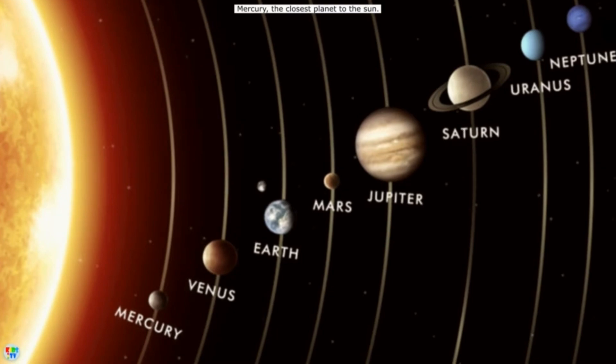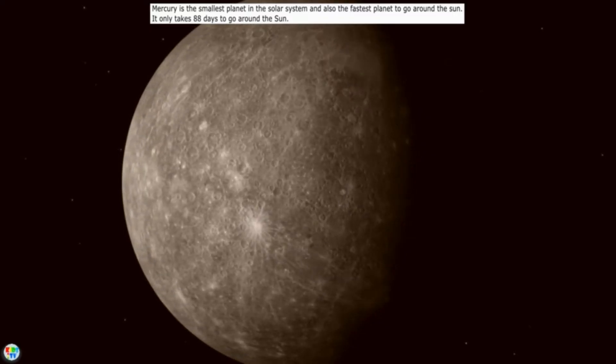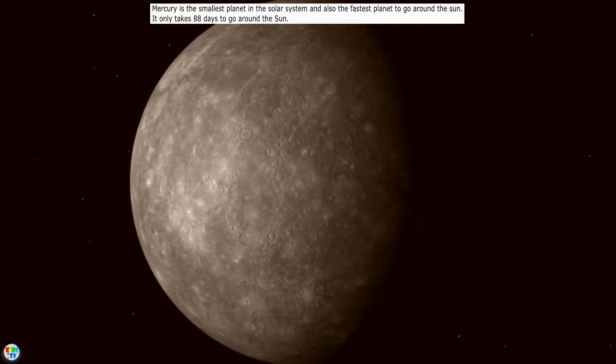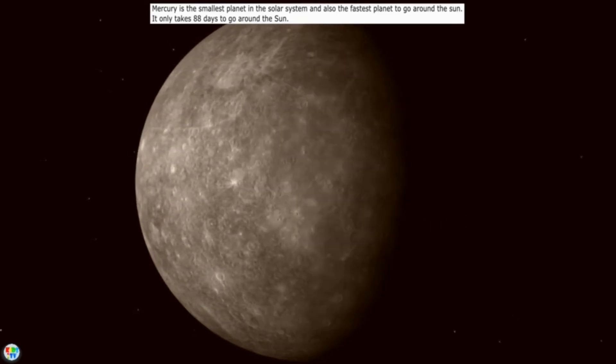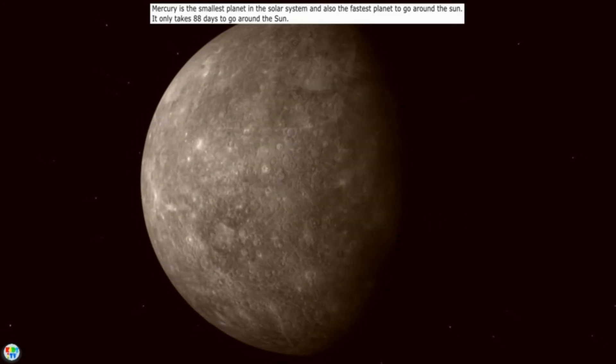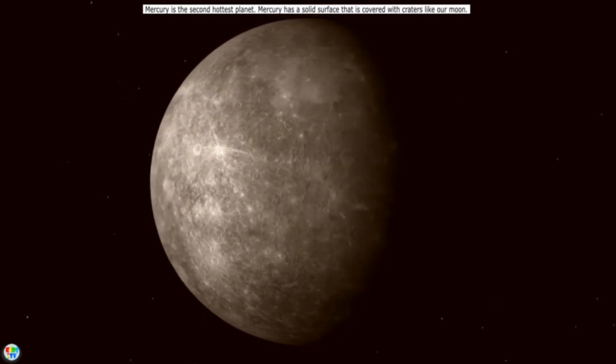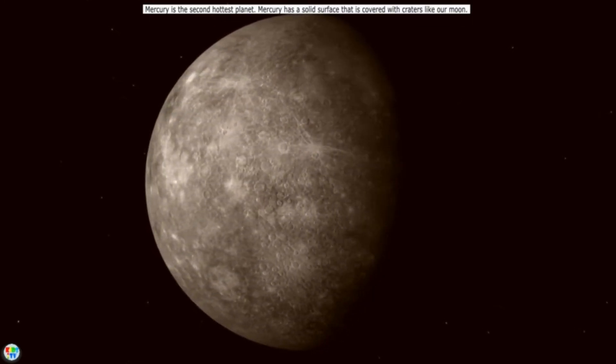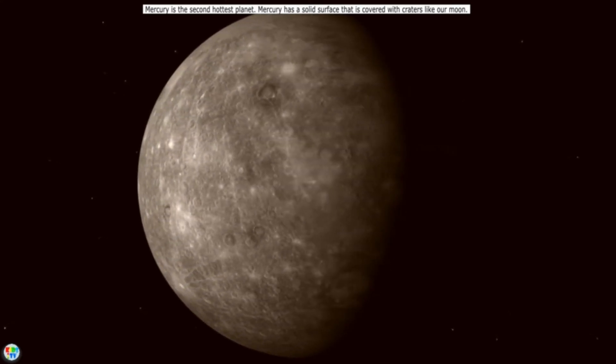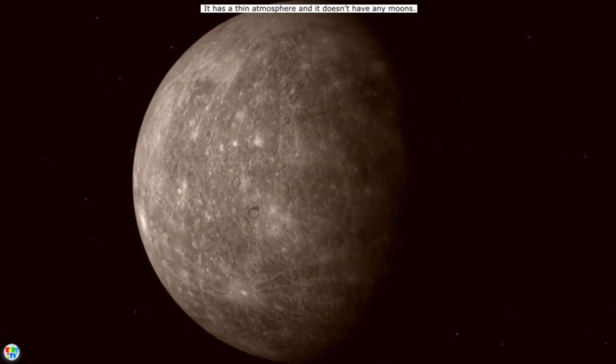Mercury, the closest planet to the Sun. Mercury is the smallest planet in the solar system and also the fastest planet to go around the Sun. It only takes 88 days to go around the Sun. Mercury is the second hottest planet. Mercury has a solid surface that is covered with craters like our moon. It has a thin atmosphere and it doesn't have any moons.